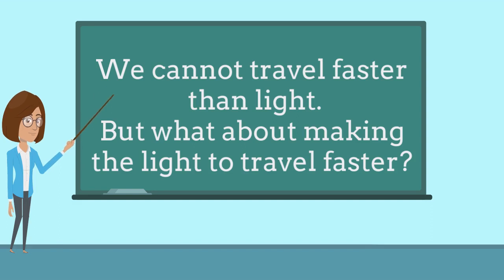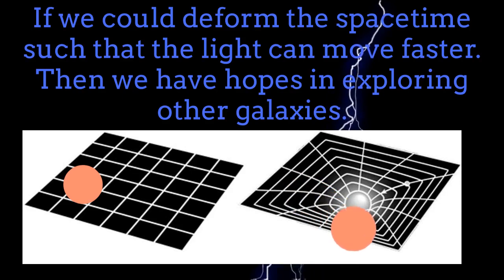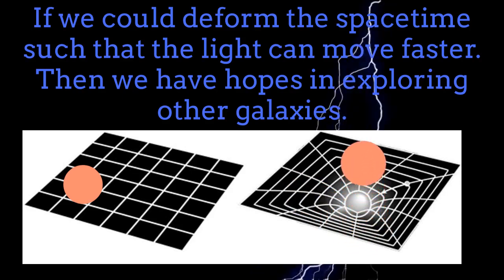If the light can move faster than what it does in vacuum, then we could certainly move faster too. We could even reach a limit where our effective speed is larger than the speed of light in the absence of gravity. Then, if we could deform the space-time appropriately, we could certainly travel faster.